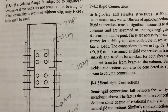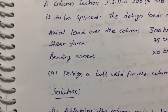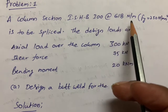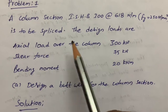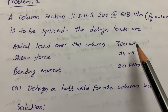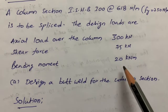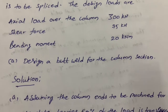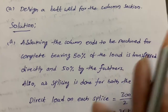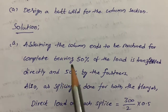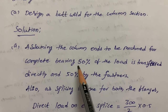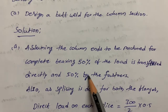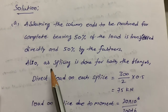Here is the example problem: ISHB 300 at 680 N/m is given as the column section to be spliced. The design loads are: axial load = 300 kN, shear force = 75 kN, and bending moment = 20 kN·m. We use a butt weld connection. First, we assume the column ends are milled, meaning 50% of the load is transferred directly and 50% by fasteners or welding.